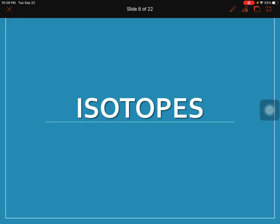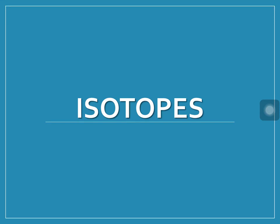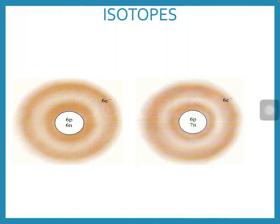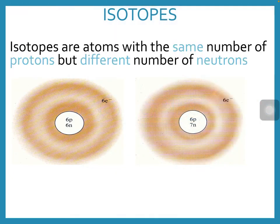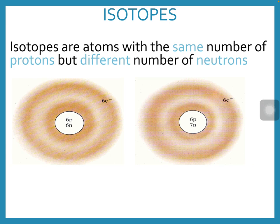In this lesson we're going to take a look at what isotopes are. Isotopes are atoms that have the same number of protons but a different number of neutrons in the nucleus.